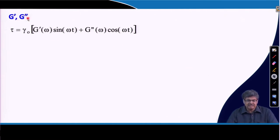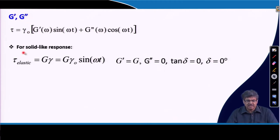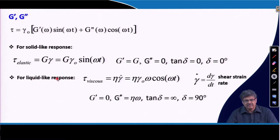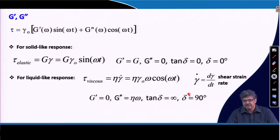For a solid-like response, G′ is essentially the shear modulus and G″ is 0, so tan δ is 0 because δ is 0°. For a liquid-like response, the shear stress is given by the viscous expression, so G′ is 0, tan δ is infinity, and the phase angle δ is 90°.